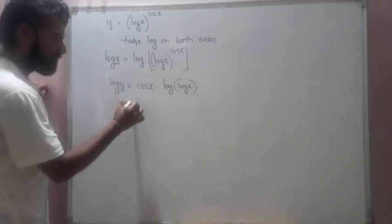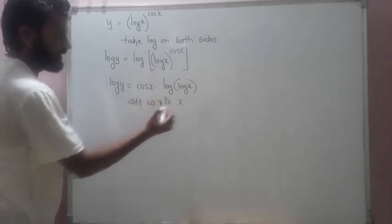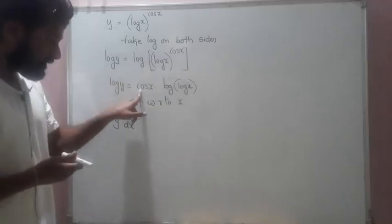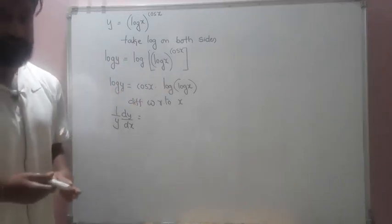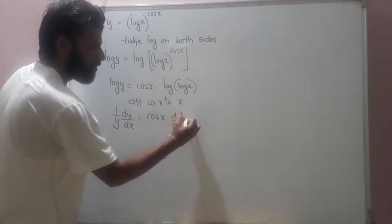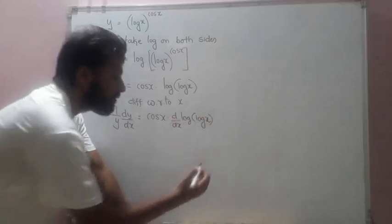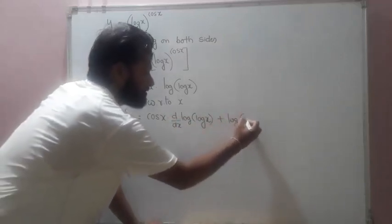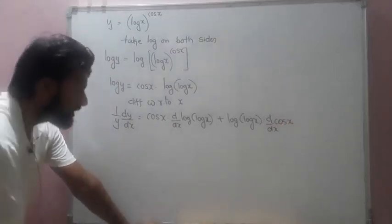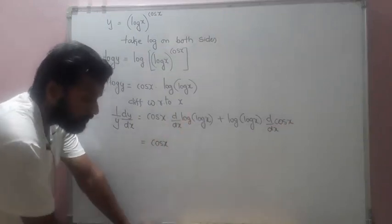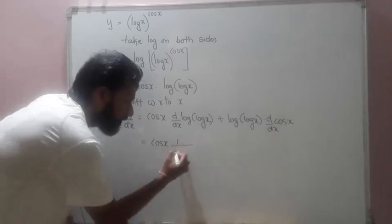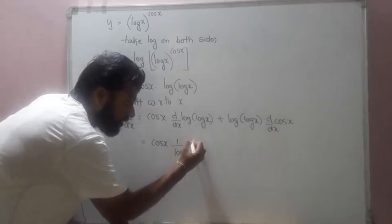Now differentiating with respect to x, the left side gives (1/y)·(dy/dx). The right side is a product of two functions, so we apply the product rule: first function cos x as it is, times derivative of log(log x). To differentiate log(log x), hide log x — that gives 1/(log x) times derivative of log x, which is 1/x.